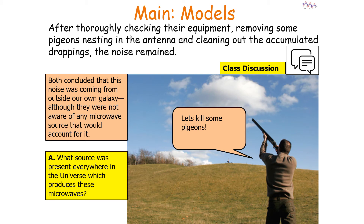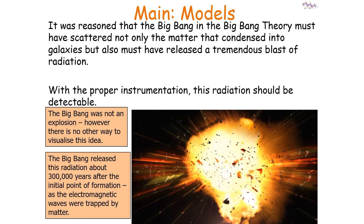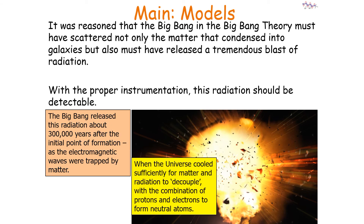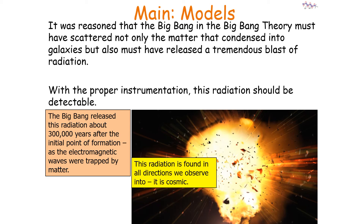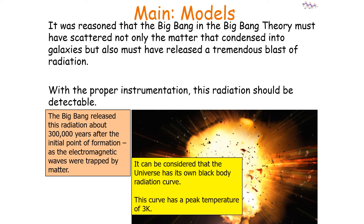Both scientists concluded that the noise was coming from outside our own galaxy, although they were not aware of any microwave source that would account for it. It was reasoned that the Big Bang must have scattered not only the matter that condensed into galaxies, but also released a tremendous amount of radiation which should be detectable. The Big Bang released this radiation about 300,000 years after the initial point of formation, as electromagnetic radiation up until that point was trapped by matter. This occurred when the combination of protons and electrons formed neutral atoms, and the radiation is found in all directions — it is cosmic.